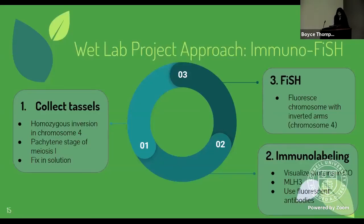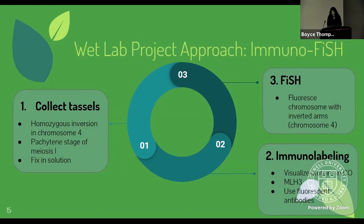For this project, we used a procedure known as immunoFISH. The first step was to collect tassels from a maize line that had a homozygous inversion in chromosome four. They were collected at the packaging stage of meiosis one and then fixed in solution. The next step was immunolabeling, with the purpose of visualizing the proteins involved in crossovers — specifically the proteins MLH3C and MLH3N — using fluorescent antibodies.